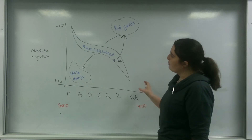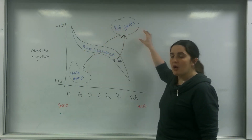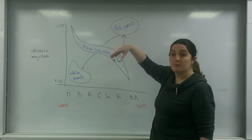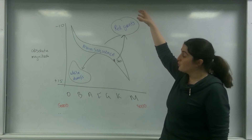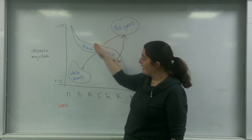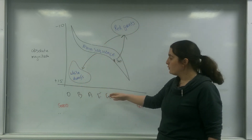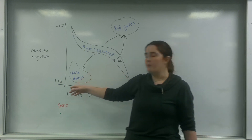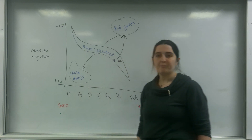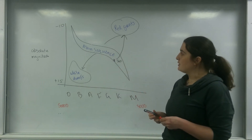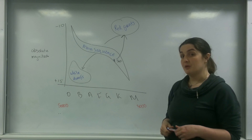So a main sequence star will become a red giant, and in some cases a red supergiant. Afterwards, the remaining core sits down here in the white dwarf region — or as a neutron star. Of course, it could also become a black hole, though a black hole would have no absolute magnitude at all since no light can escape.